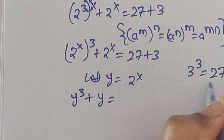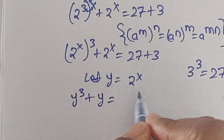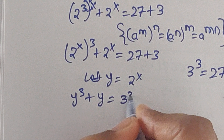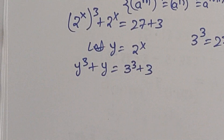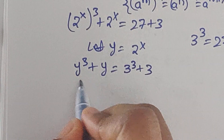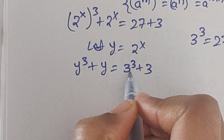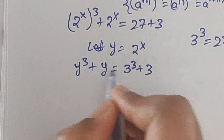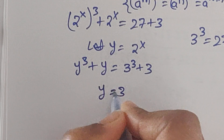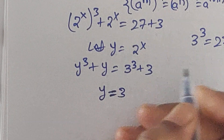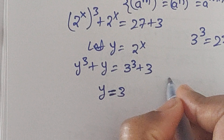Here 27 can be written as 3 to the power of 3, so we have y³ + y = 3³ + 3. Comparing these two terms, y³ + y = 3³ + 3, it means y equals 3.